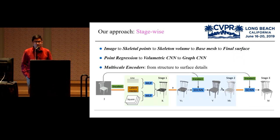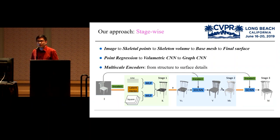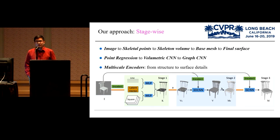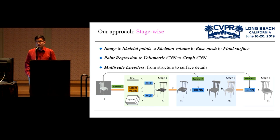Our key idea is a coarse-to-fine formulation: first recover structure, then generate surface from structure. The structure is the object skeleton — a point set generated by shrinking surface points along reverse normal directions. We introduce the skeleton as a bridge due to its strong topology modeling properties and compact lower learning complexity. Our approach has three stages: we directly regress 3D skeleton points from the image using MLPs, convert skeletal points to a volumetric representation and apply 3D CNNs to produce a skeleton volume, then use graph CNN to learn deformation of a base mesh to fit the target surface.